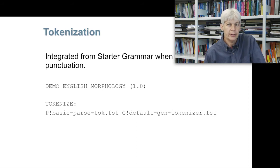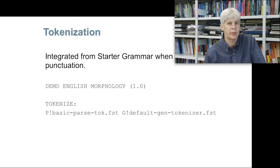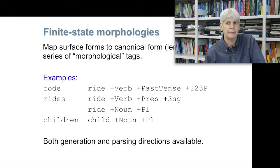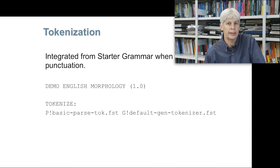So we have integrated the tokenizers. In our grammars right now, you have the morphology section with 'Tokenize', then 'P!' for basic parse tokenizer FST and 'G!' for default gen tokenize FST — recall these were integrated from the starter grammar. Now we're going to integrate the finite state morphological analyzer.